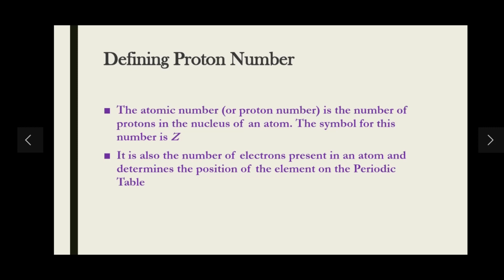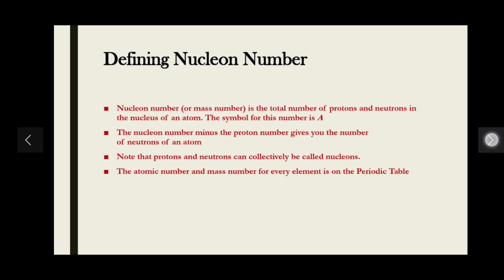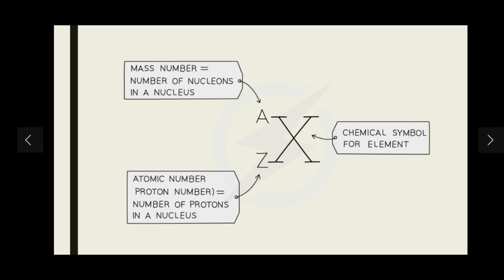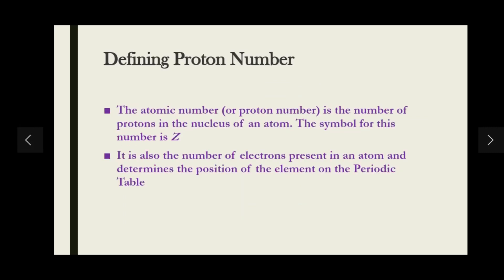In the notation for an element, X represents the chemical symbol — for example, He for helium. The atomic number is always the smaller number, and the mass number is always the larger number. The proton number is also equal to the number of electrons present in a neutral atom, and it determines the position of the element on the periodic table.